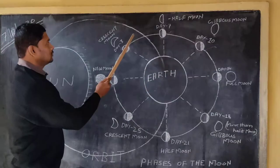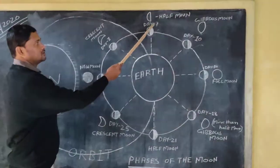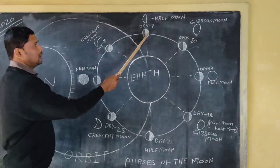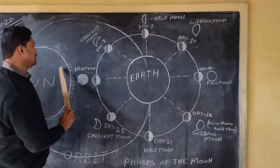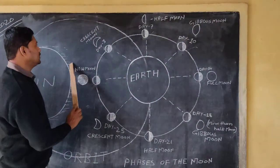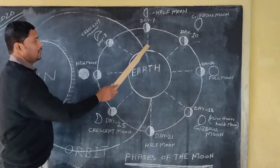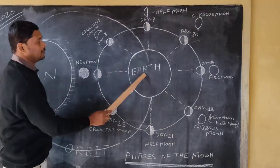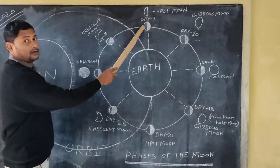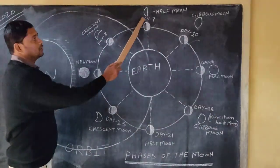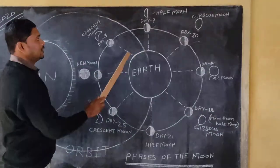Again, by day seven, the moon has moved further along its orbit. The moon is getting the sunlight directly from this side. As we are here on the earth, we are able to see half of the moon, and this is known as the half moon.